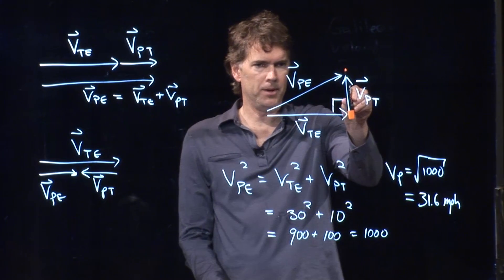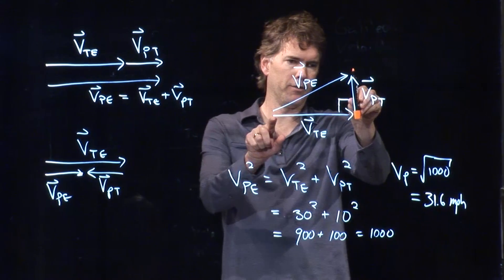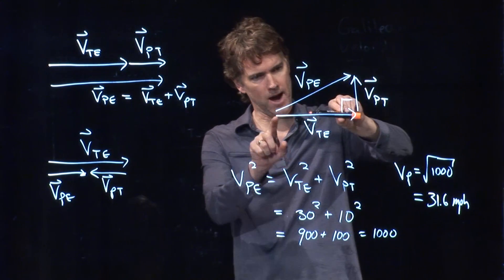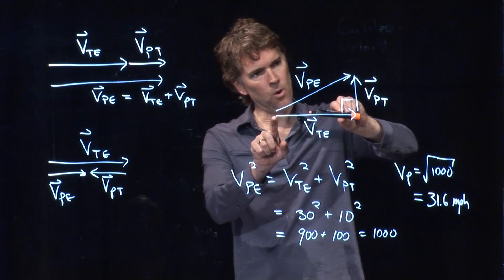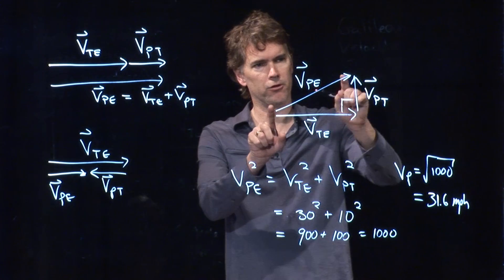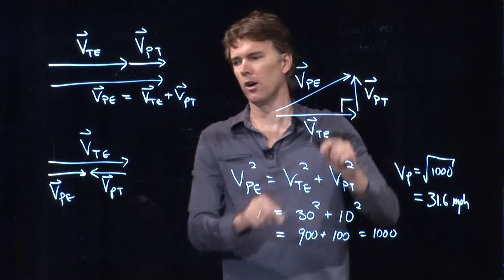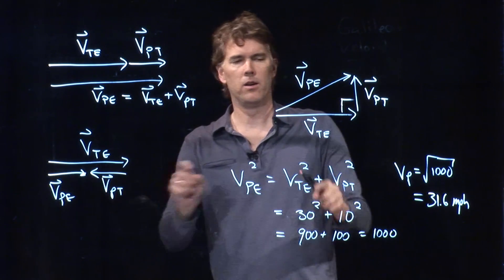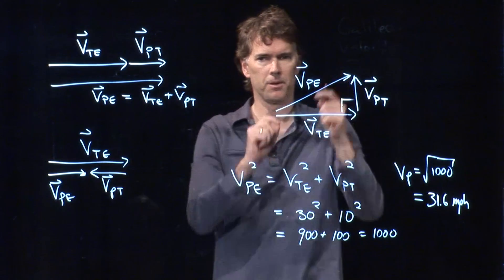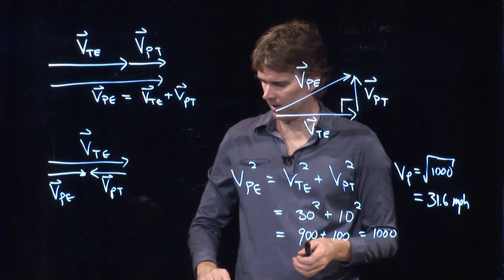So look at this picture right here. If I take VPT and I move it in a different direction, I can either add it to VTE, I can subtract it from VTE, or I can go somewhere in between. And so VPE is going to go from this short arrow to a maximum of this long arrow or something in between the two.